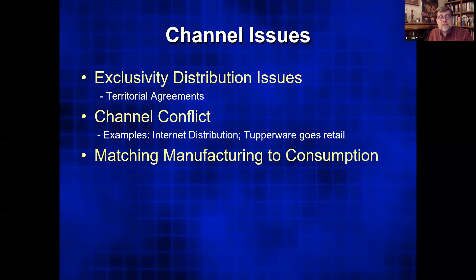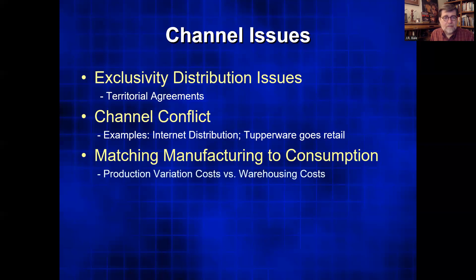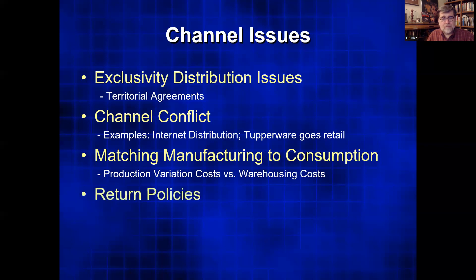One challenge is matching your manufacturing to consumption — how much should you produce? There are different mathematical models for trying to answer that question. Predicting demand is always difficult. You're dealing with production variation costs — producing more or less each has a cost — and storing product has a cost because you have to pay for the warehouse space, whether you own it or rent it.